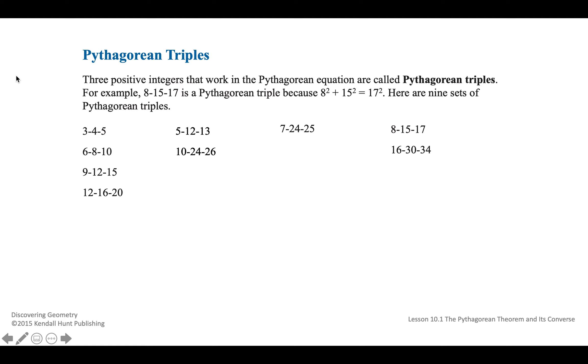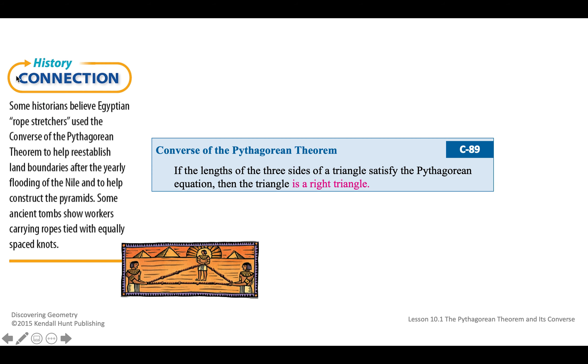A Pythagorean Triple: three positive integers that work in the Pythagorean equation are called Pythagorean Triples. For example, 8, 15, 17 is a Pythagorean Triple because 8 squared plus 15 squared is equal to 17 squared. You can try it on a calculator and see that it works. Here are nine sets of Pythagorean Triples. So all of these work in the same way.